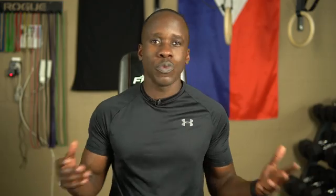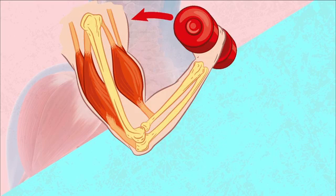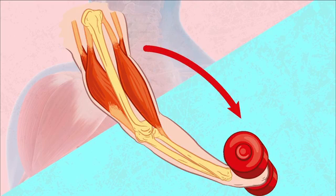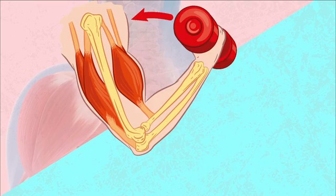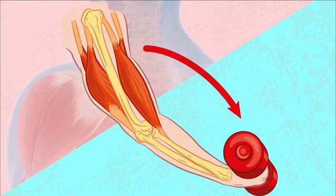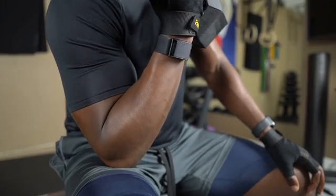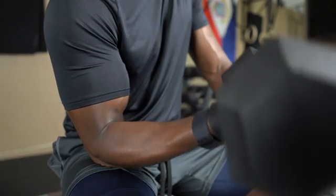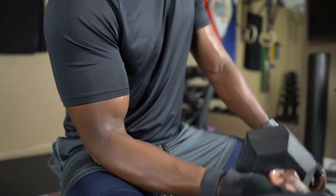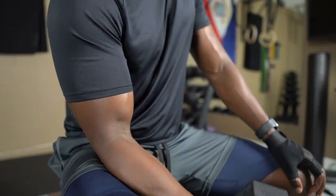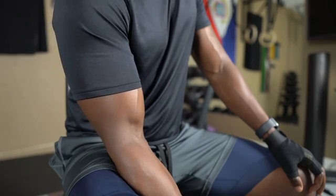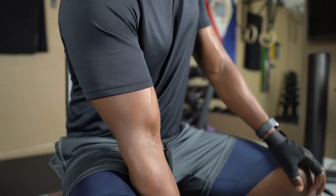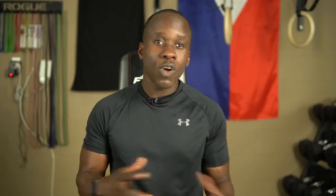What happens when the muscle gets shorter? Well, we essentially end up pulling whatever the muscle is attached to. So we're moving our forearm along with the hand that's attached to it, and of course the dumbbell that's in the hand. It's a beautiful thing.